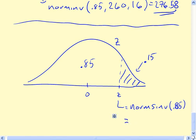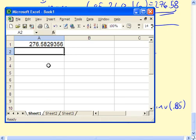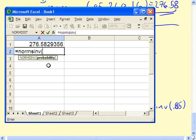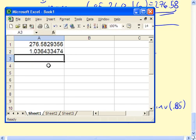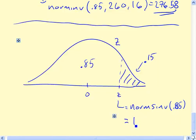So we can pull up Excel and do that. Now, if we do NORMSINV, it's only the probability, so 0.85. So just slightly over 1, so 1.036, let's say. So there's the z value.